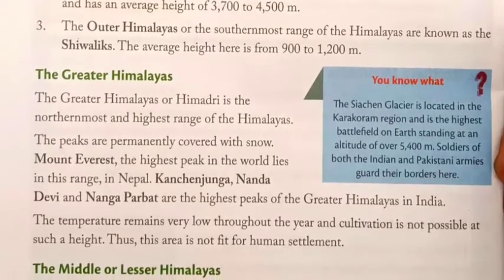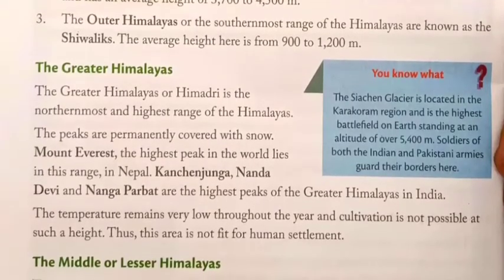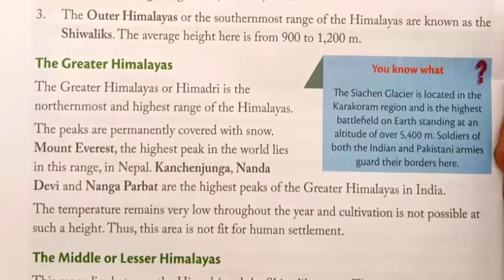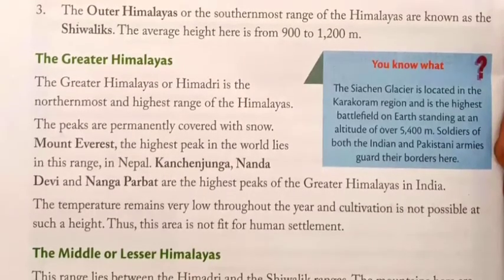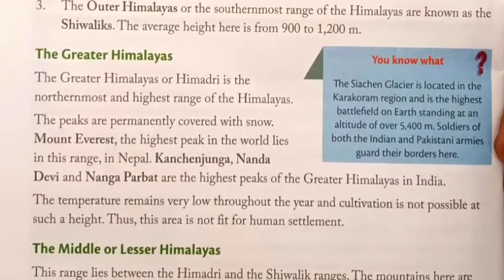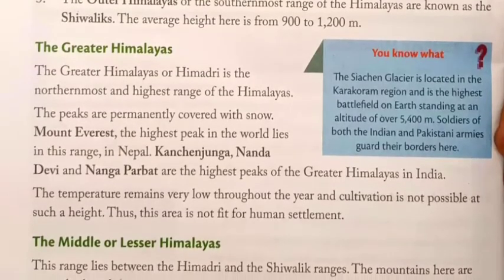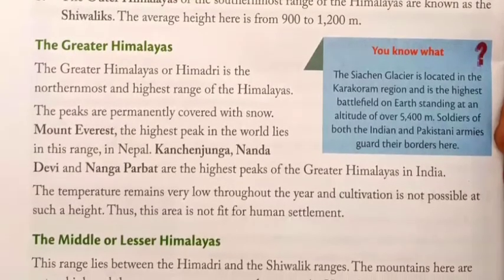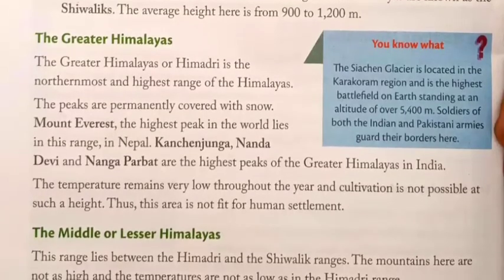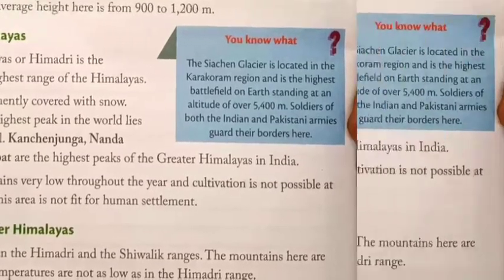Did you know? The Siachen Glacier is located in the Karakoram region and is the highest battlefield on earth, standing at an altitude of over 5,400 m. Both the Indian and Pakistani armies guard their borders here.